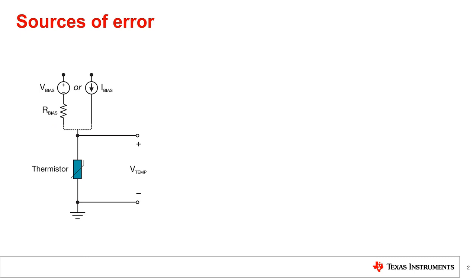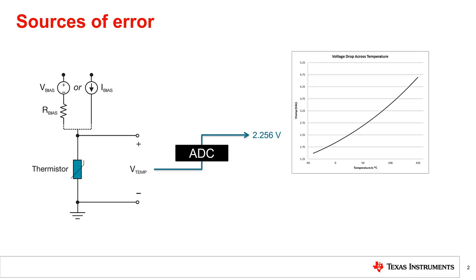A thermistor is a discrete two-terminal device whose effective resistance values change with temperature. Using an ADC, we can measure the voltage drop across the thermistor. From there, you can use any temperature conversion method in software to calculate what temperature that voltage corresponds to. In this case, it is 25 degrees Celsius.